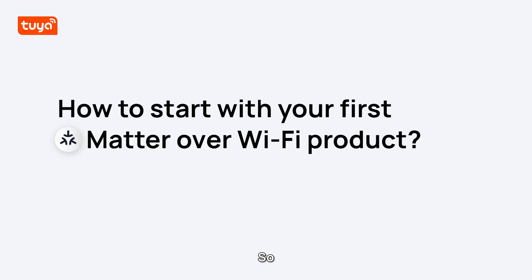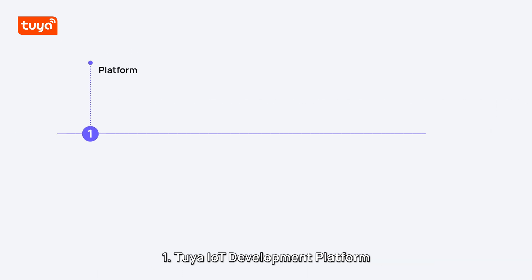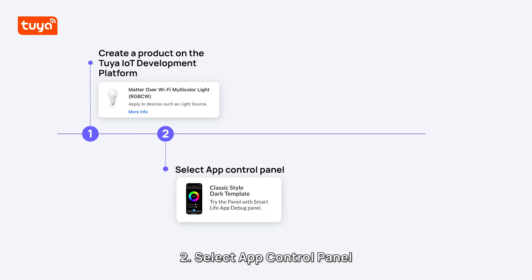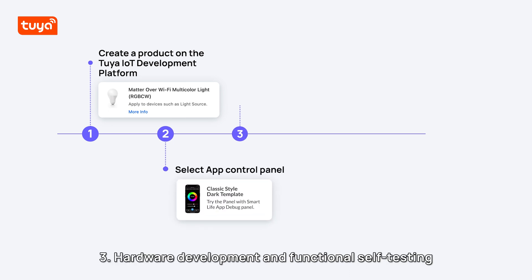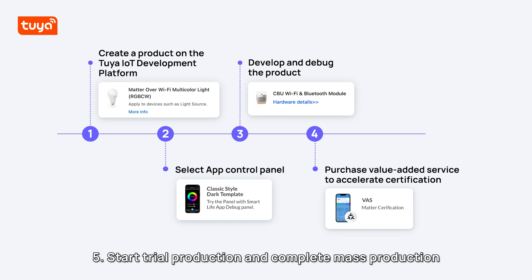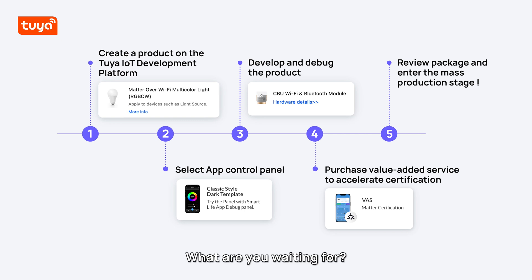So how do you start with your first Matter over Wi-Fi product? One: Tuya IoT Development Platform defines Matter product functions. Two: select app control panel. Three: hardware development and functional self-testing. Four: purchase Matter product certification value-added services. Five: start trial production and complete mass production. Just five steps, and you can quickly, efficiently, and cost-effectively develop Matter devices. What are you waiting for? Let's develop Matter devices with Tuya now.